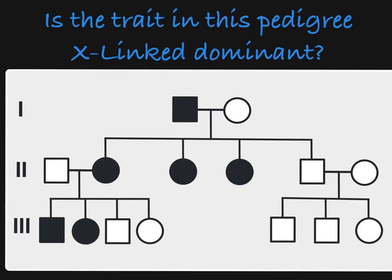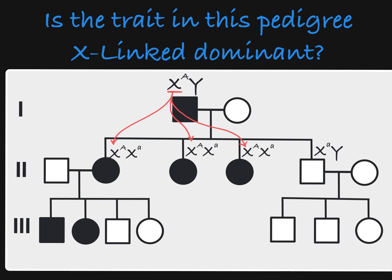With those rules in mind, let's take a look at some practice pedigrees to see if we can tell if the trait is inherited in an X-linked dominant manner. Here we see an affected male who has all affected daughters but no affected sons. That's what we would expect with X-linked dominant inheritance, as he passes on his dominant X to his daughters, but his sons receive their single X from their mother, who in this case is unaffected and therefore has two recessive alleles.